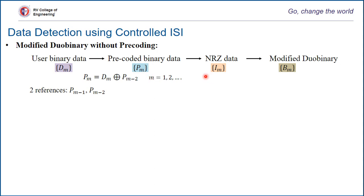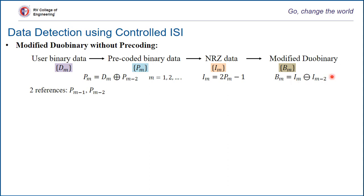Once you generate the precoded binary data, this has to be modulated using the NRZ principle, so im will have either plus 1 or minus 1. pm is either 1 or 0; accordingly im will be plus 1 or minus 1, and this is transmitted as modified duobinary. Modified duobinary is the subtraction of two sinc pulses — one right-shifted and one left-shifted — resulting in im minus im minus 2, which generates modified duobinary. Simple duobinary was simply im plus im minus 1.